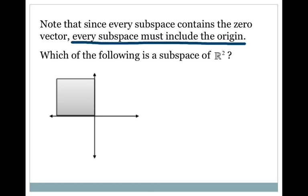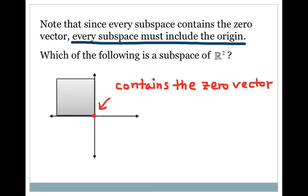For practice, let's look at which of the following is a subspace of R2. The first one is this shaded area in the second quadrant. We're going to go through the steps involved in the definition of subspace to see if this subset of R2 meets the criteria. First of all, we can see that the origin is contained in this set, so it contains the zero vector.